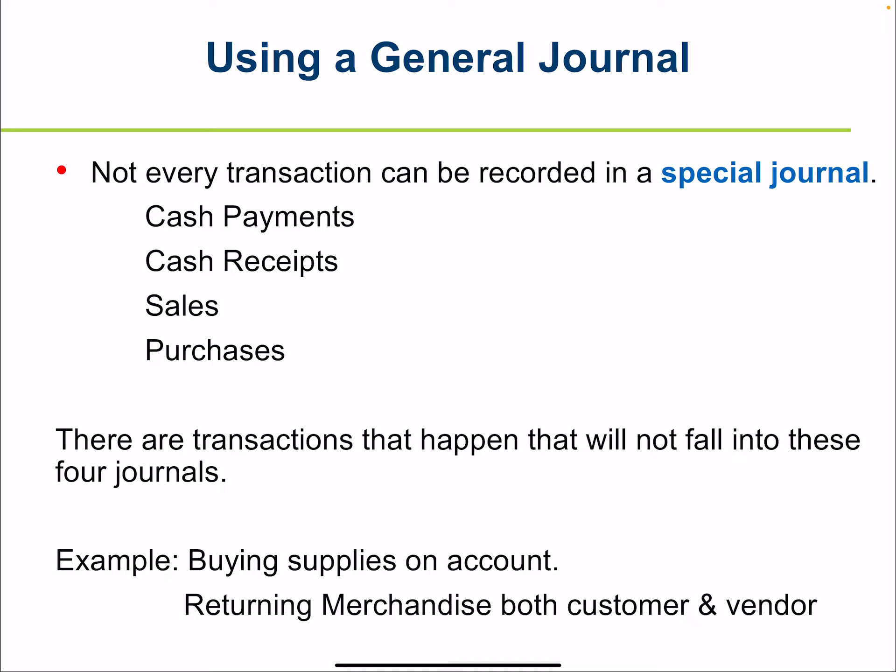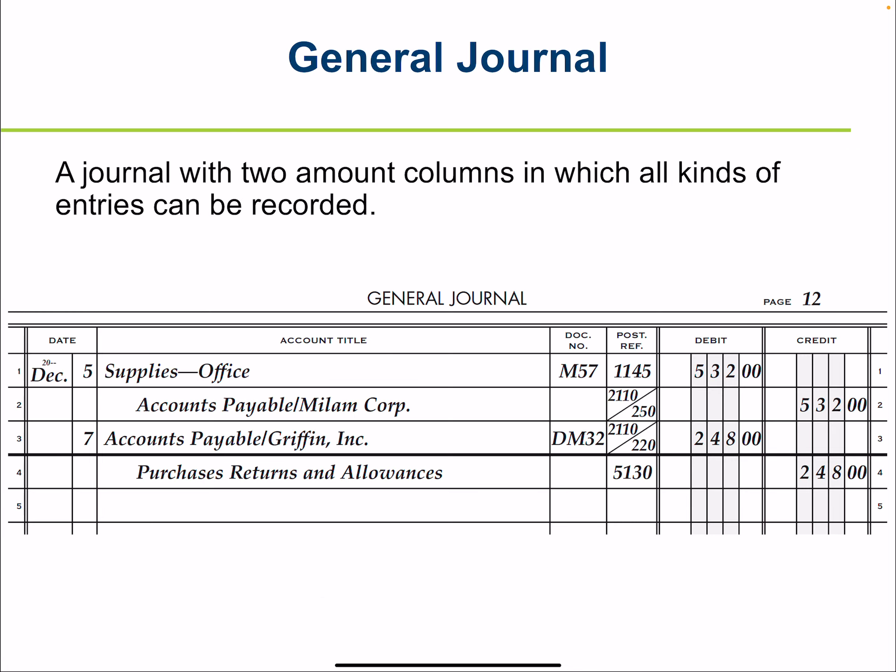Transactions that are not recorded in a special journal are recorded in a general journal. A journal with two amount columns in which all kinds of transactions can be recorded is a general journal, and this is what we'll take a look at this chapter and add to our other four journals.